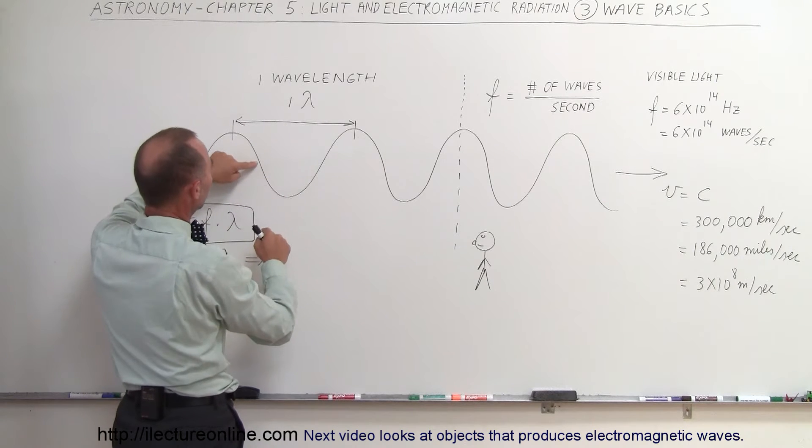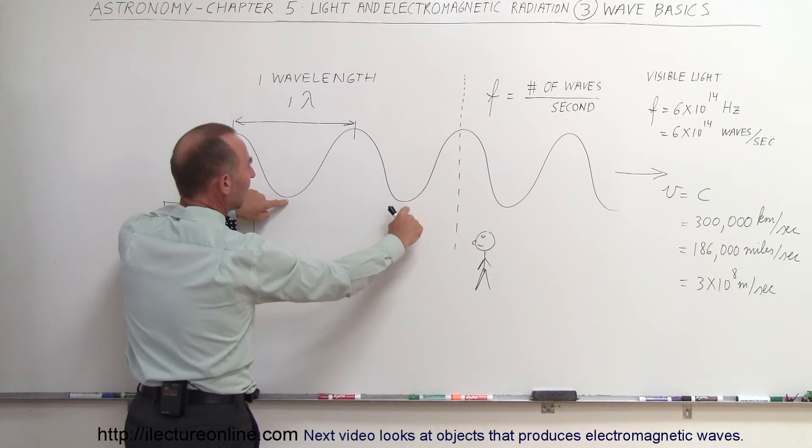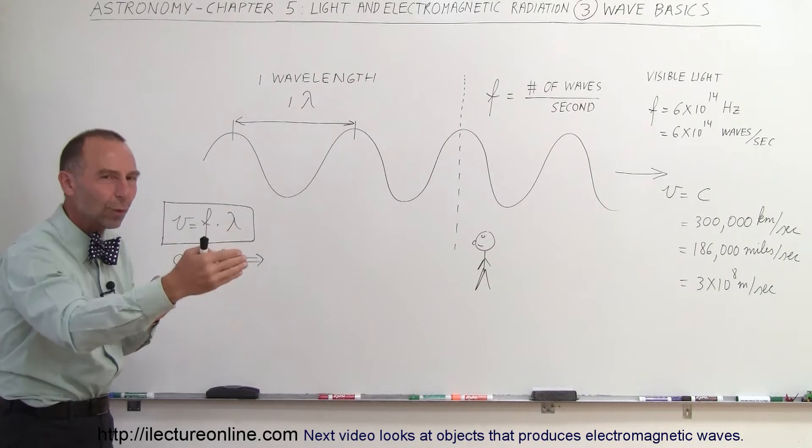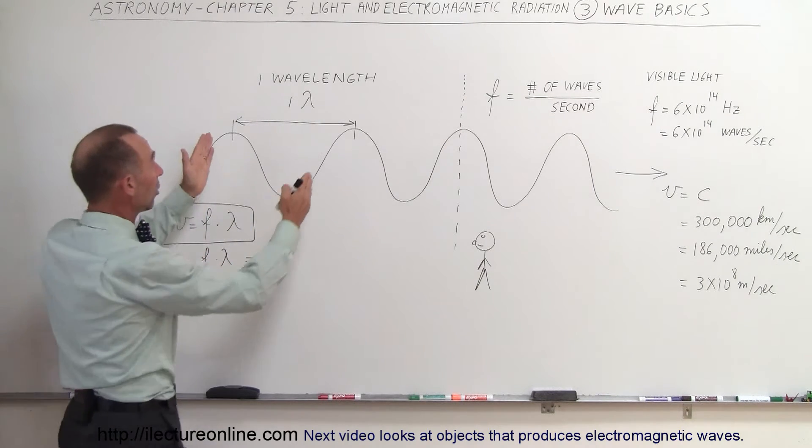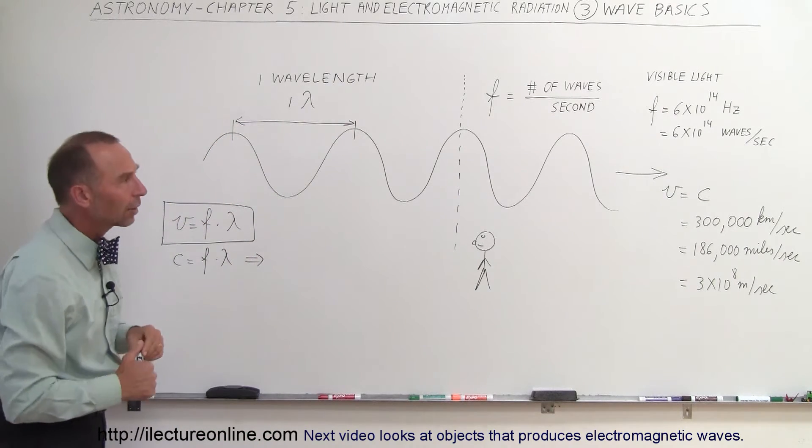It doesn't matter where you start. You could start here and then end over here. That would be the same thing. Or you could start down here and end down there. When you get to the same point of the next wave, that's called a wavelength. And so, we can then measure how long that is and that will be the length of the wave for that particular electromagnetic radiation.